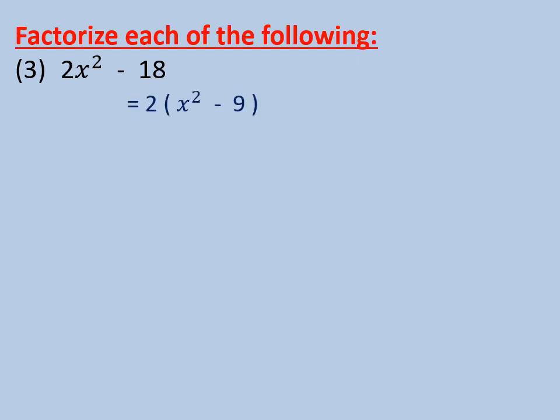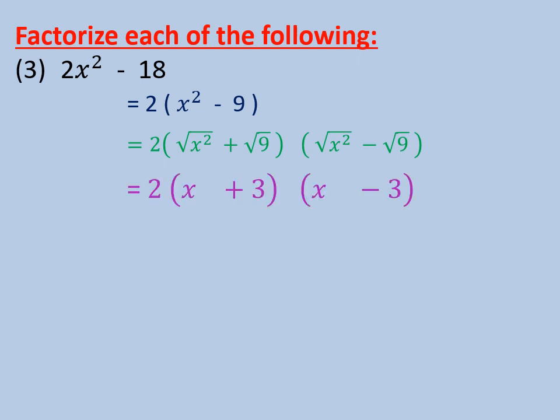Then we will make 2 times (root of x² plus root of 9)(root of x² minus root of 9). So the factorization will be 2(x + 3)(x - 3). Number 4: x³ minus 64x.